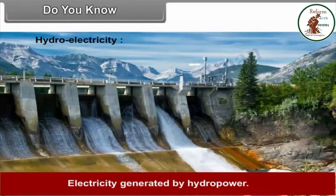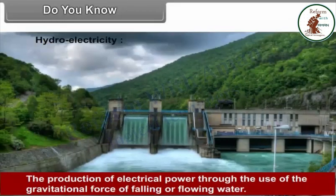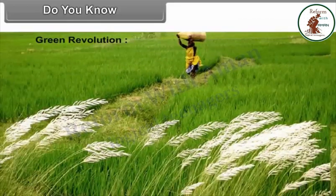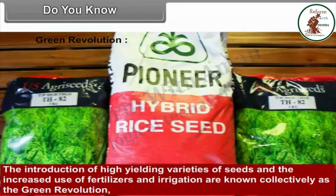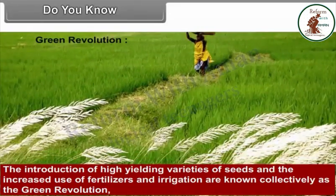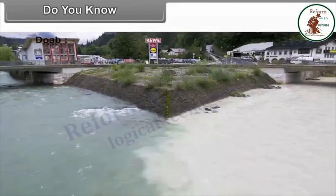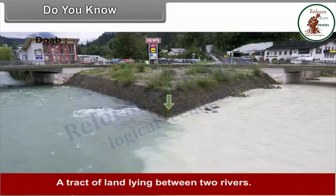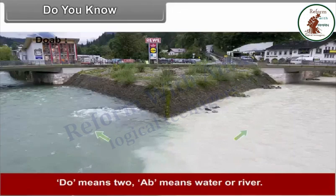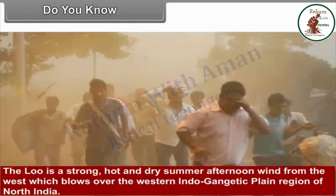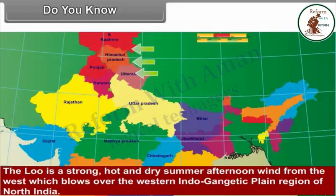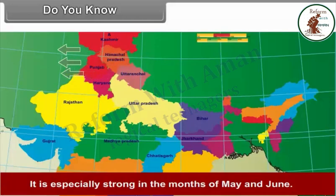Hydroelectricity is electricity generated by hydropower - the production of electrical power through the use of the gravitational force of falling or flowing water. The Green Revolution refers to the introduction of high-yielding varieties of seeds and the increased use of fertilizers and irrigation, which provided the increase in production needed to make India self-sufficient in food grains. Doab is the tract of land lying between two rivers - 'Do' means two and 'Ab' means water or river. The Loo is a strong, hot and dry summer afternoon wind from the west which blows over the western Indo-Gangetic plain region of North India, especially strong in May and June.